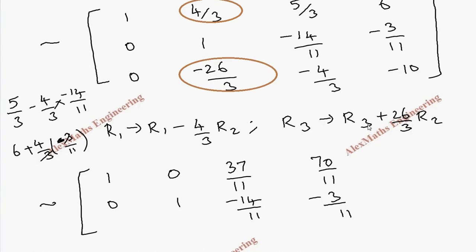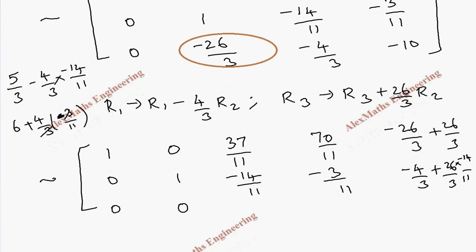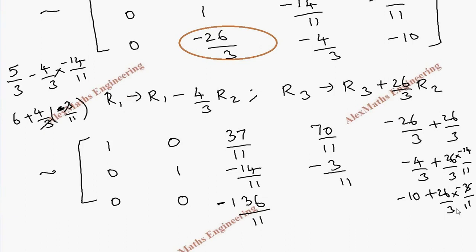Coming to R3: -26/3 plus (26/3)×1 gives 0. This is already 0. Then -4/3 plus (26/3)×(-14/11): after simplification this gives -136/11 plus (26/3)×(-3/11). We can cancel terms, and taking LCM gives 136/11.